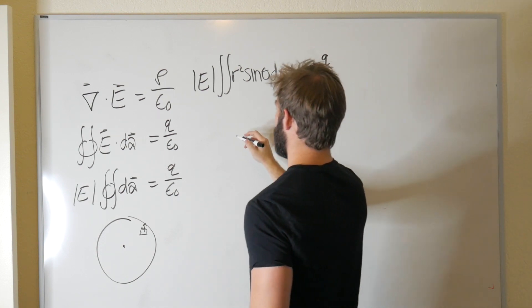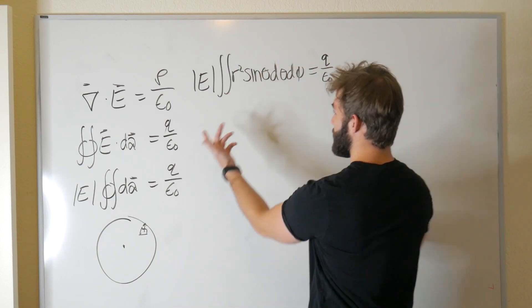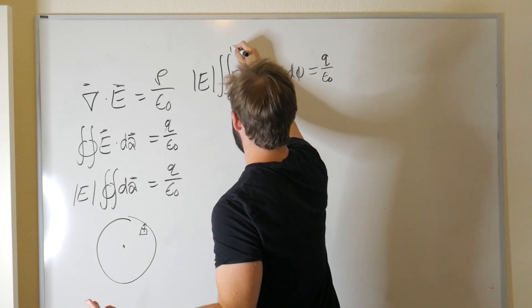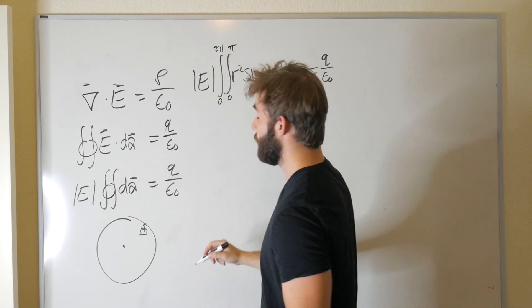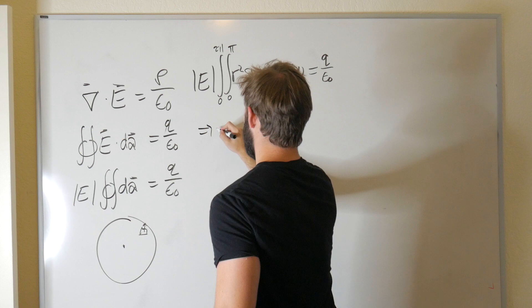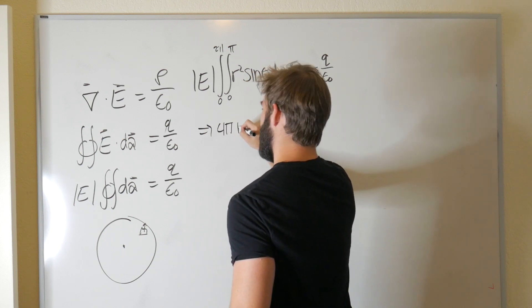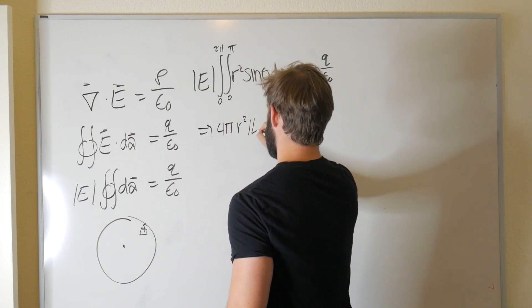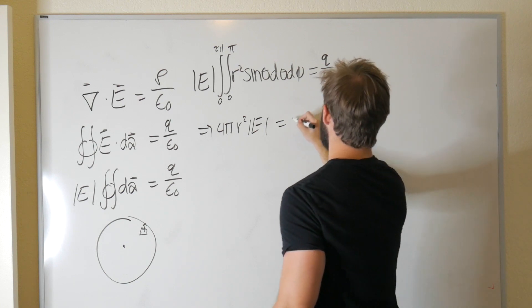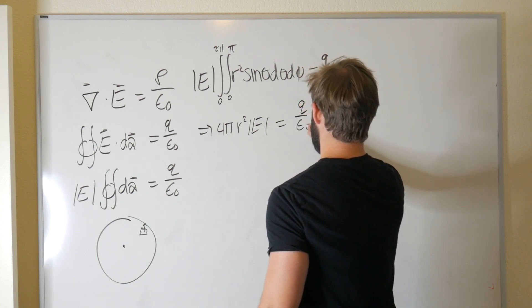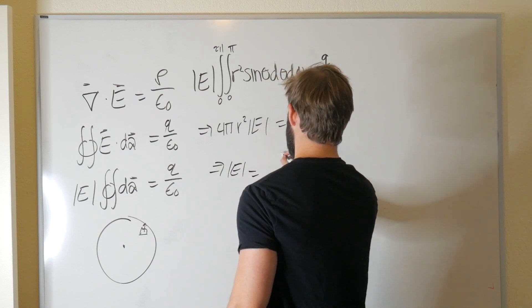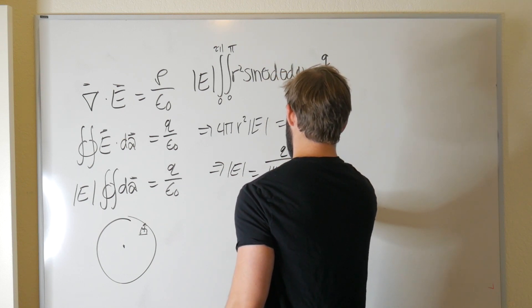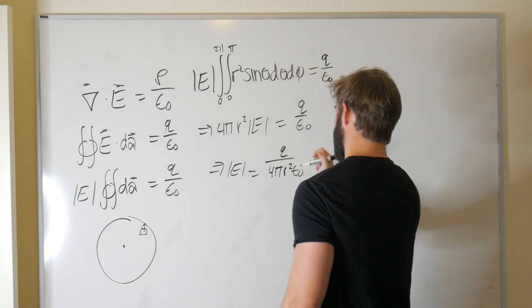In other words, theta goes from zero to pi, as you do. Phi goes from zero to two pi, as you do, which tells us four pi r squared times the magnitude of the electric field is equal to Q over epsilon zero, which then tells us that we can write this magnitude equal to Q over four pi r squared epsilon naught.